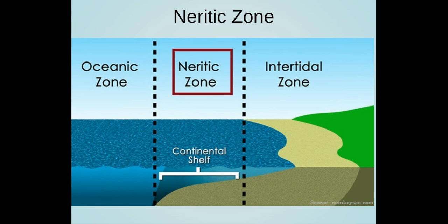The neritic zone receives plenty of nutrients from rivers emptying into the ocean near coastlines and the mixing caused by tides and currents. Sunlight is able to penetrate through the neritic zone, leading to a very productive ecosystem with algae, phytoplankton, and marine plants serving as the base of the food web.